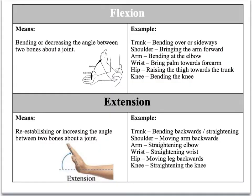Here we've got flexion, meaning bending or decreasing the angle between two bones about a joint, and extension, which is increasing the angle between two bones around a joint.